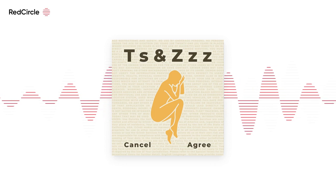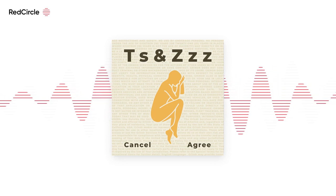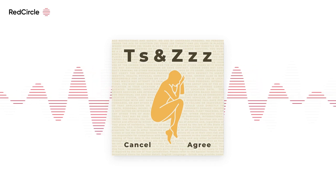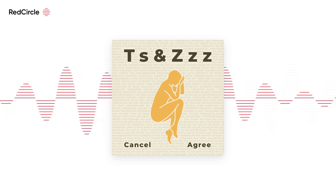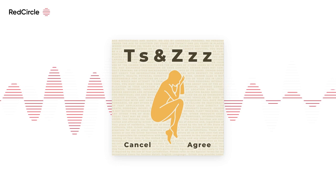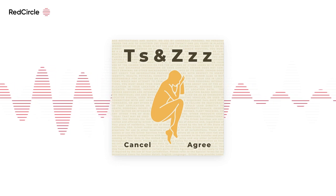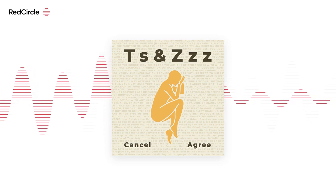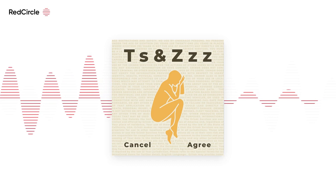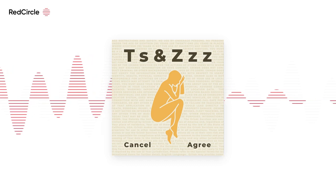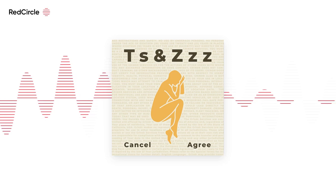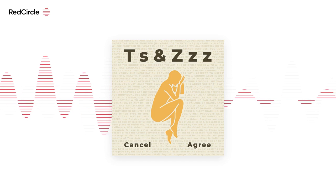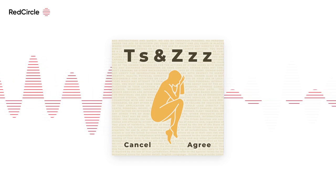Good evening, and welcome to another night of T's and Z's. T's and Z's is a podcast to help you get better sleep. We use long, boring, legal agreements as a way to distract our minds and gently drift off to sleep. I am your host, Scott Eltchison, and tonight you'll be listening to part one of Airbnb's Terms of Service. Tonight's episode is narrated by yours truly.